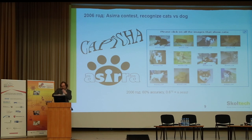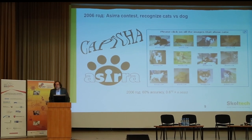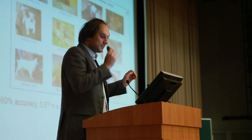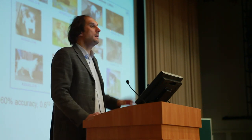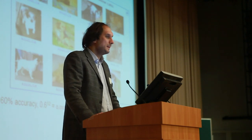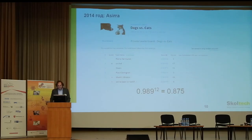Going back in history — a competition around 2006 asked people to create a classifier between cats and dogs. All modern algorithms of that time were able to get a maximum of 60% accuracy — barely better than 50%. But in eight years, it moved up to 99%. So what happened?